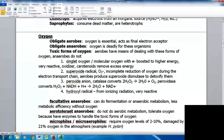Carotenoids remove excess energy. The superoxide radical has incomplete reduction of oxygen during electron transport. Aerobes produce superoxide dismutase to detoxify these. The peroxide anion can be toxic. Catalase converts hydrogen peroxide to water and oxygen. Peroxidase converts hydrogen peroxide along with NADH plus hydrogen to water and NAD+. The hydroxyl radical is formed from ionizing radiation and is very reactive.